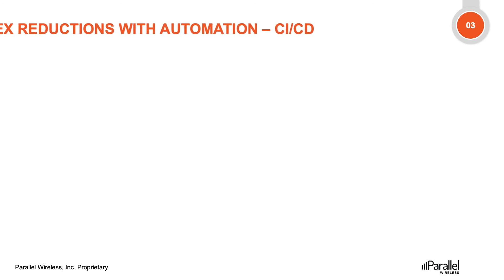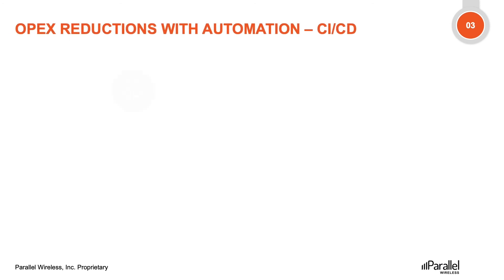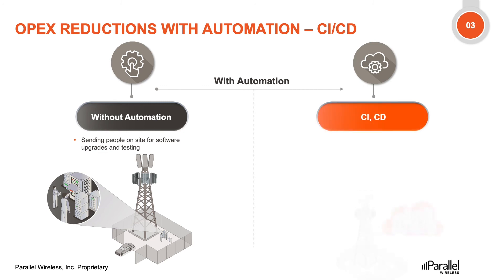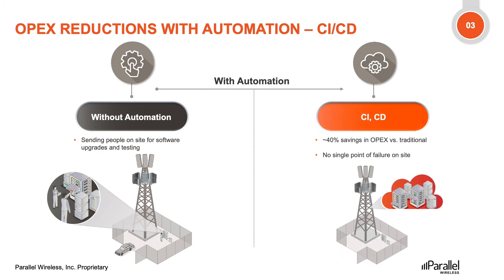Once the network service has been provisioned, any new features, bug fixes, or software upgrades and downgrades should be done in an automated way. CI/CD provides the agility and flexibility to launch newer features, get bug fixes, and apply software upgrades. Without automation, sending people to sites for software upgrades and testing is tedious, time-consuming, costly, and error-prone. With CI/CD, software upgrade and downgrade can be done in seconds or minutes with no manual intervention, leading to significant reduction in cost and time.